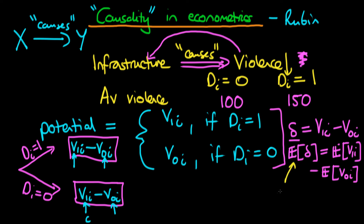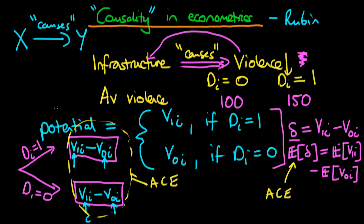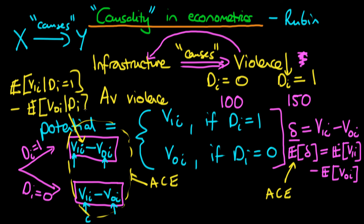When we talk about the average causal effect, what we're doing is grouping these two groups together and evaluating the average difference between V1_i and V0_i across both groups. We're also often interested in what is the difference between V1_i and V0_i within those that were actually treated — that is, those states which did receive infrastructure spending. That means evaluating the expectation of V1_i given D_i equals one, minus the expectation of V0_i given D_i equals one. This is the average causal effect on the treated, which abbreviates to ACT.